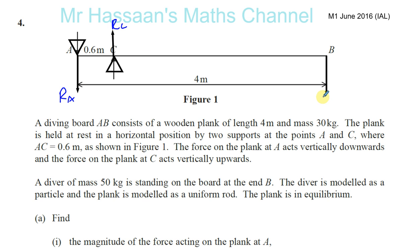Because the diver is modeled as a particle and the plank is modeled as a uniform rod, the weight of the plank will act exactly in its geometric center, exactly two meters from each end. Halfway, its geometric center. And its mass is 30 kilograms, so that's 30G Newtons. So those are all the forces. This is the man standing there. This is the weight. This is the reaction at C, reaction at A. And we know the plank is in equilibrium.